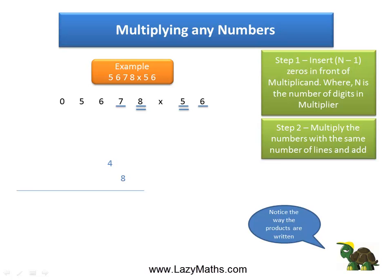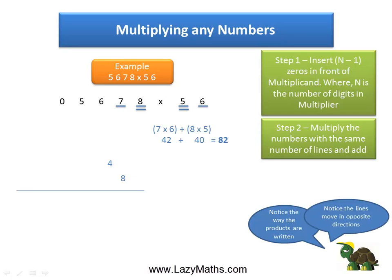The next step for multiplying and adding is 7 times 6 and 8 times 5. 7 times 6 is 42, and 8 times 5 is 40. 42 plus 40 is 82. We put 82 in the carryover format.